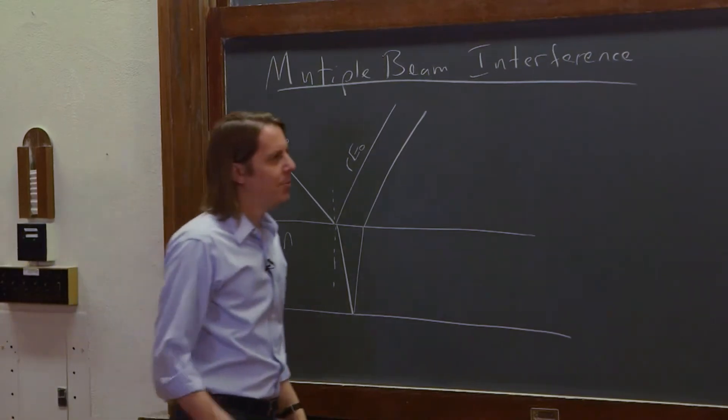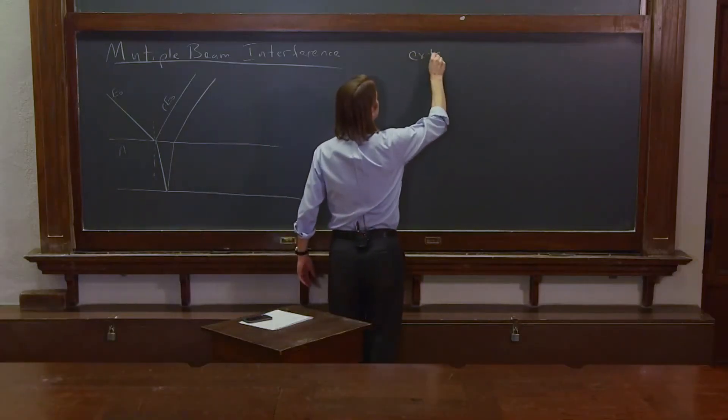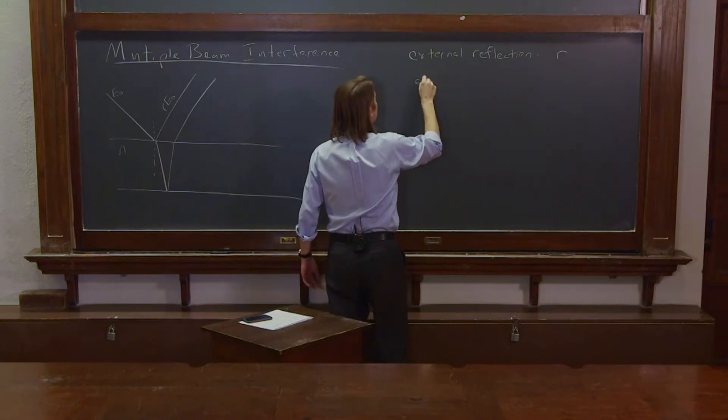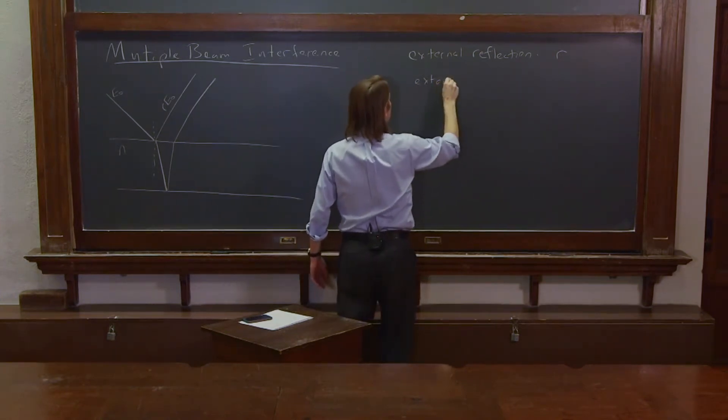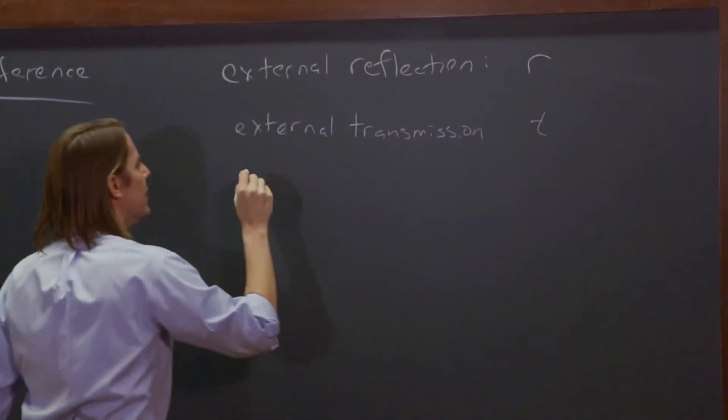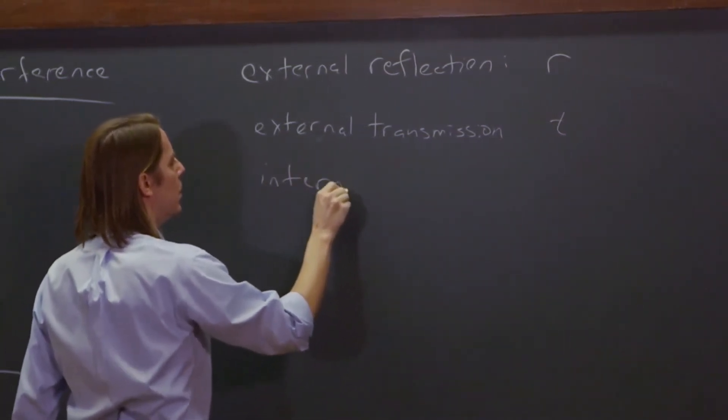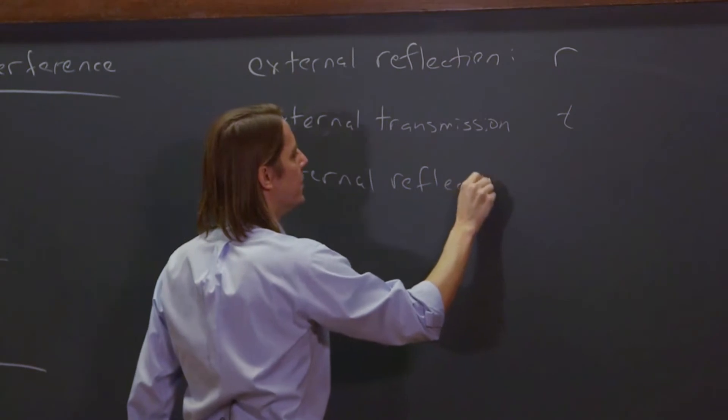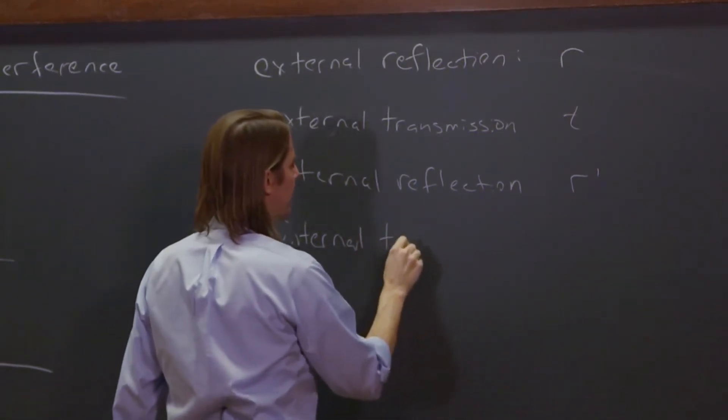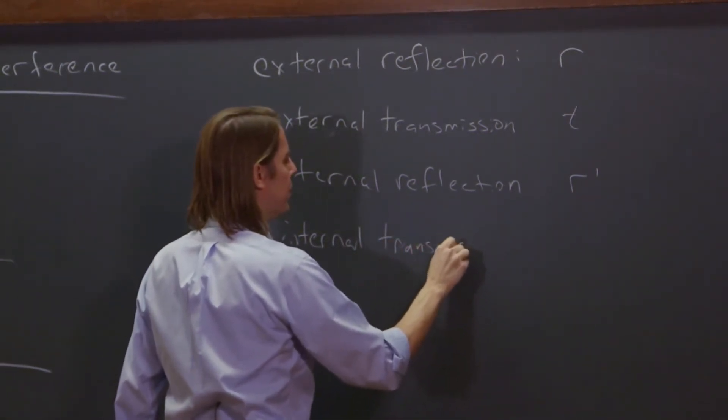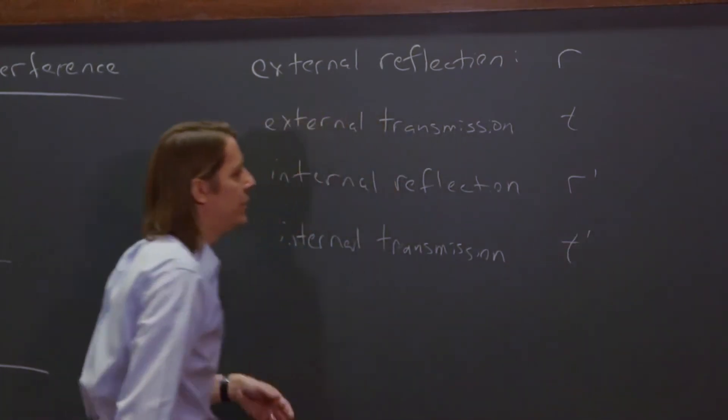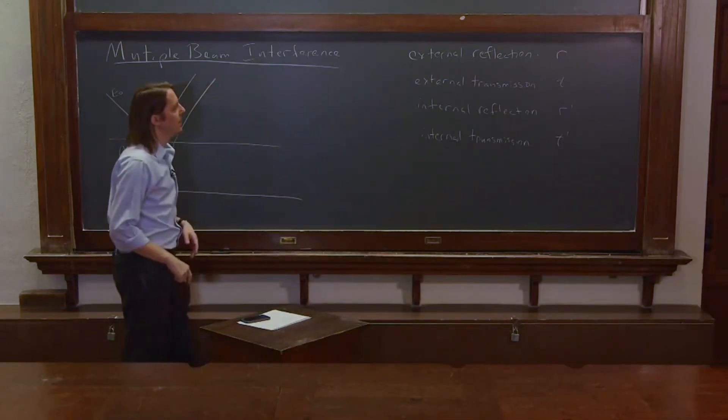What we're going to do now is keep up with that more carefully. So let's do the external reflection, let's call that R. And let's call the external transmission, so that's going into the glass, T. And let's go ahead and label the internal reflection R-prime and the internal transmission, that's basically going from inside the glass or the dielectric to the outside as T-prime. So internal processes have a prime on them, and external don't. Okay?